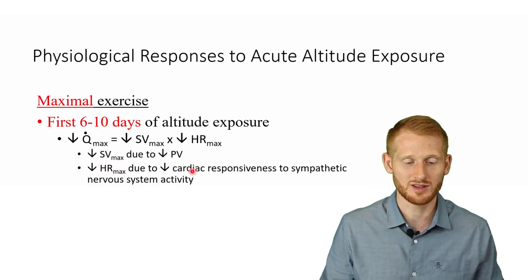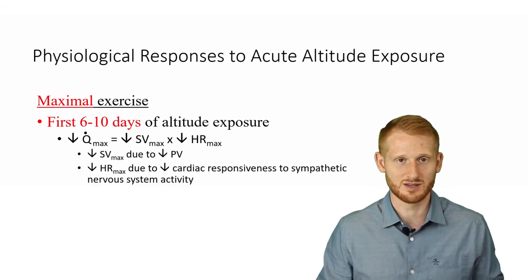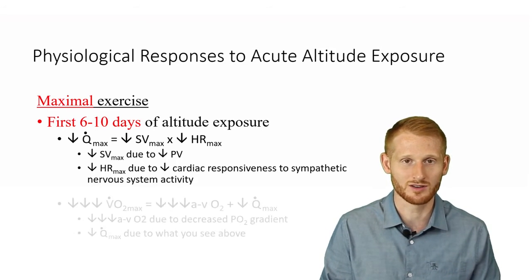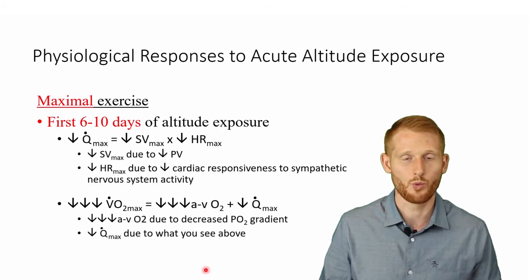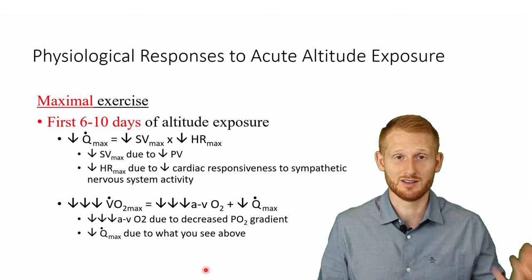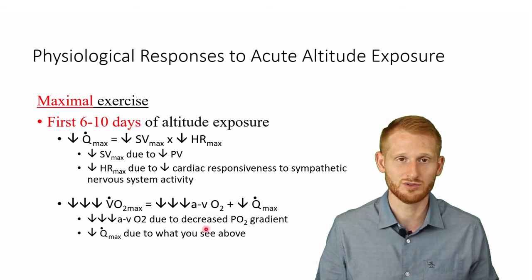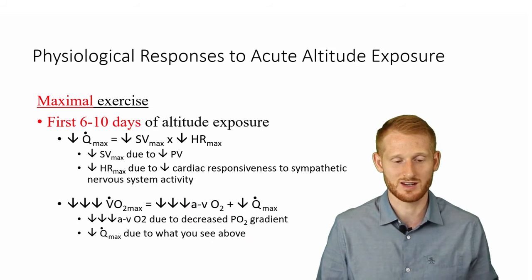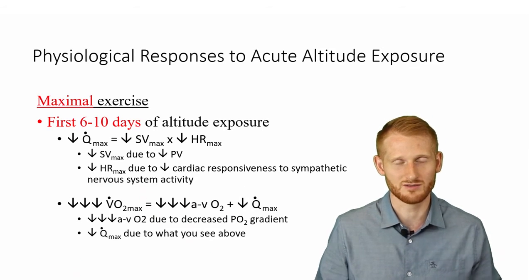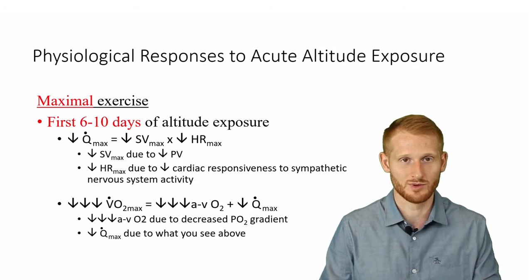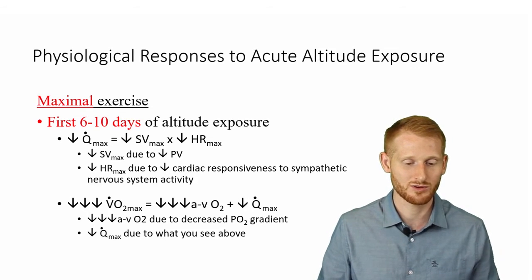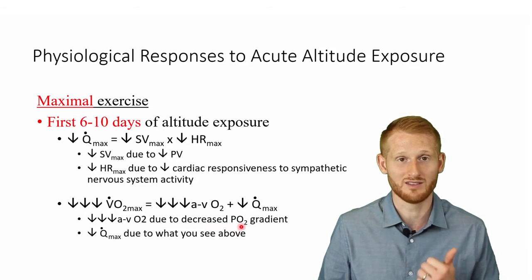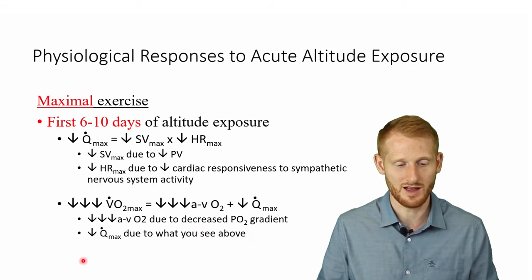Maximal stroke volume decreases due to the plasma volume decrease already discussed. Maximal heart rate decreases slightly because the heart becomes less responsive to sympathetic activity — the constant sympathetic drive causes a down-regulation where it has less impact on the heart. We also see a decrease in AvO2 difference compared to sea level, and a lower maximal cardiac output compared to sea level, which decreases VO2 max — how much oxygen we consume to produce aerobic energy — and therefore decreases exercise capacity.